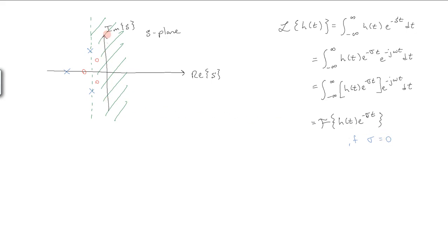which corresponds to the imaginary axis here, because sigma is the real axis, at sigma equals zero, then we have here the Fourier transform of h of t itself.